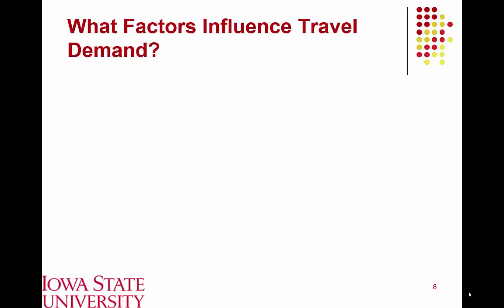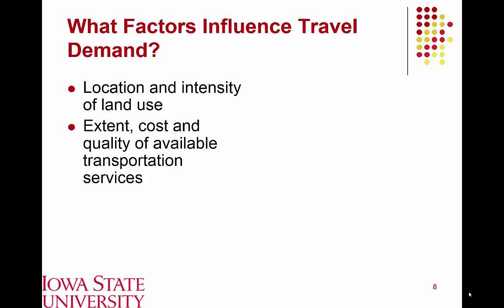The factors influencing travel demand include the location and intensity of land use. For example, residential areas see a lot of trips from 7–9 a.m. and 4–6 p.m. as people leave for work and return home, while commercial or industrial areas show different trip-making characteristics. Other factors include the extent, cost, and quality of transportation services — whether a transit system is available, the quality of the road network, and how bad congestion is.